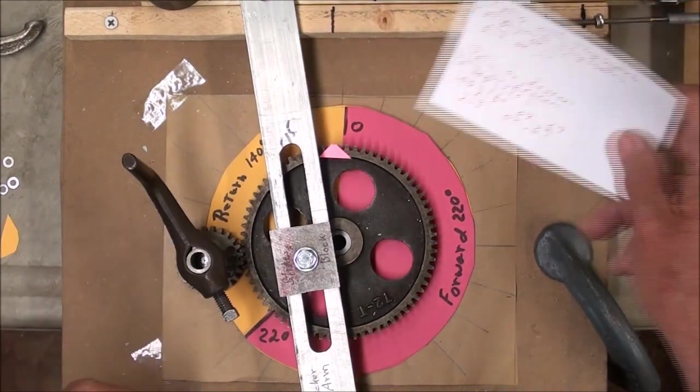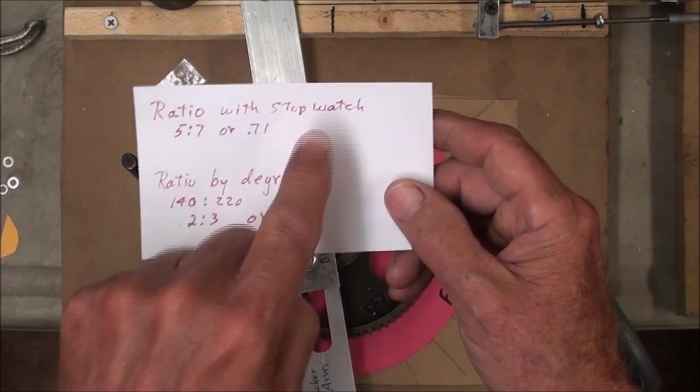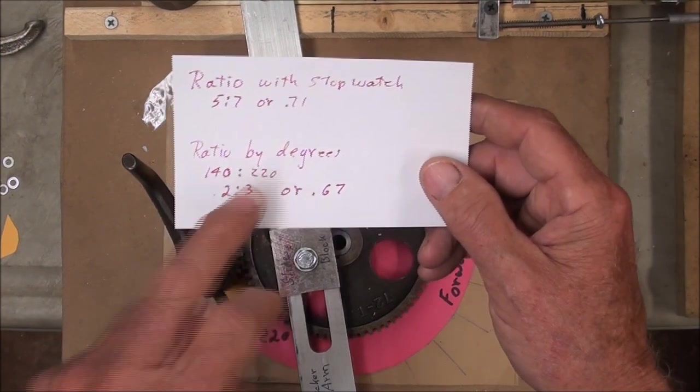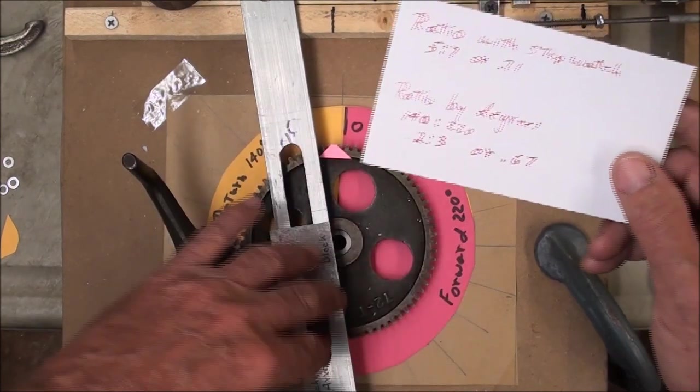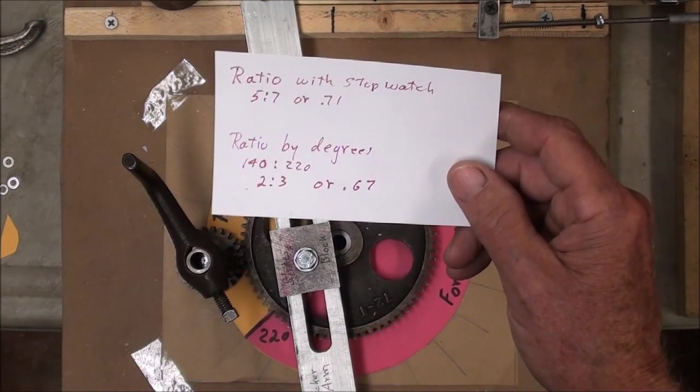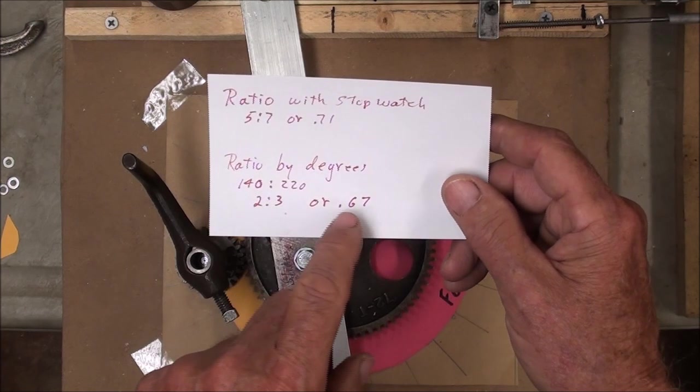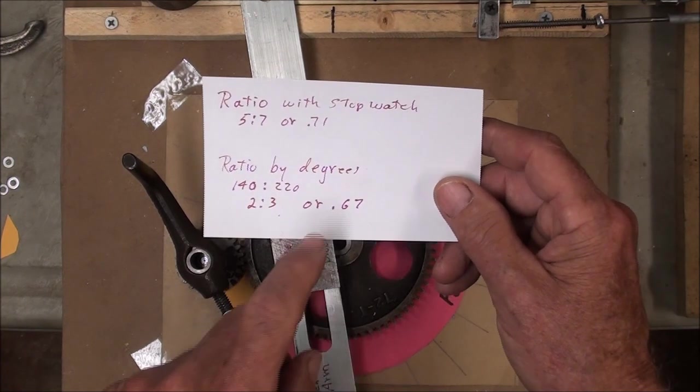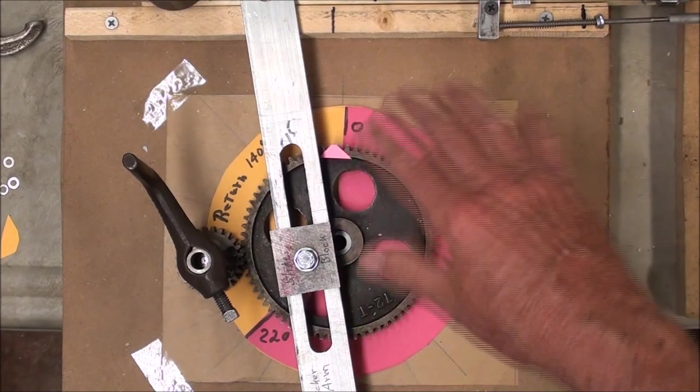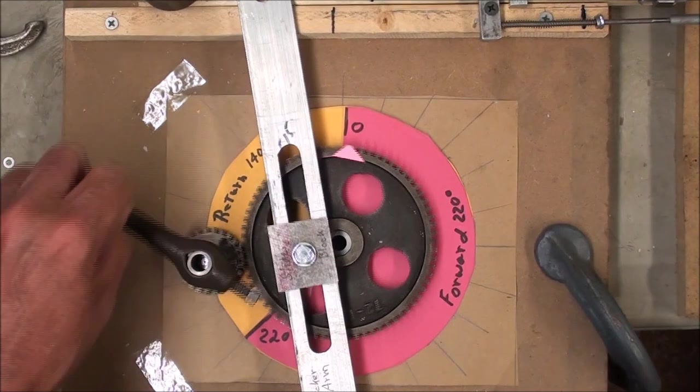And then to carry it one step further, and I am not a mathematician by any stretch of the imagination, but the ratio that I came up with by using the stopwatch was a 5 to 7, or in a decimal, .71. But by degrees, and this will not be real accurate here because of the backlash, the ratio by degrees was about 140 degrees to 220 degrees, and you simplify that as a 2 to 3 ratio, which comes to a decimal of a .67. And you can see that the .67 really is very close to the .71, so I was doing it by two methods, by actually timing it, which was way too much work and expense and effort, as compared to just the degrees. So you might find that at least mildly interesting.